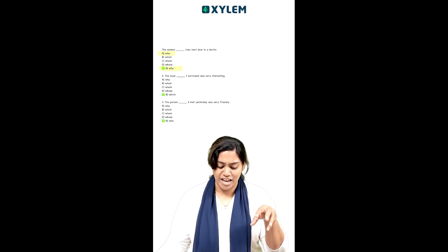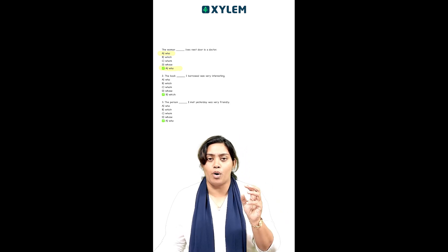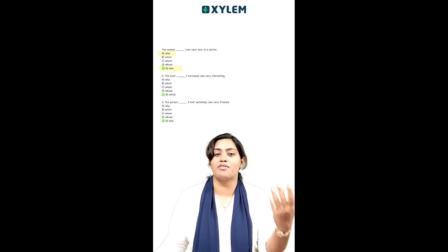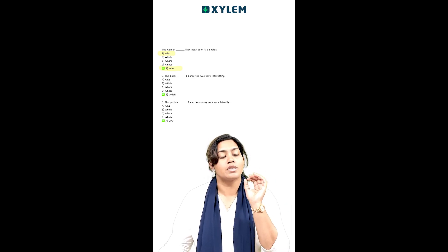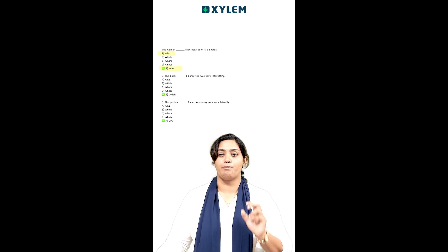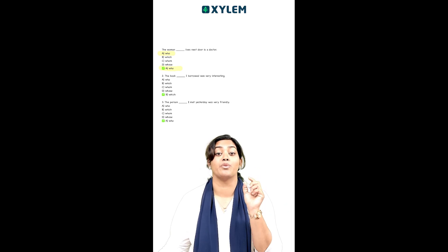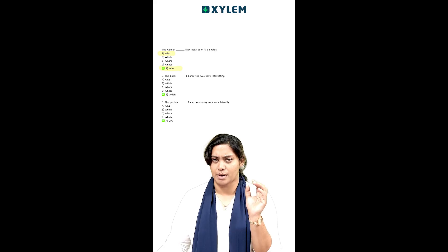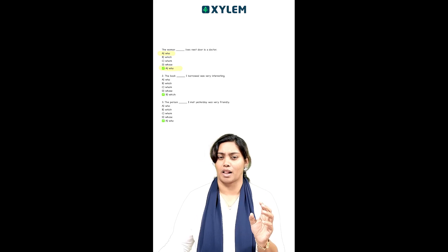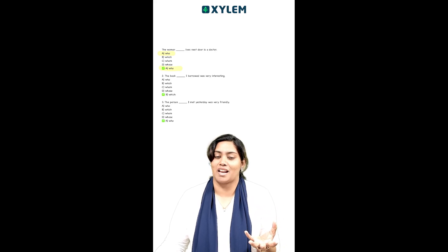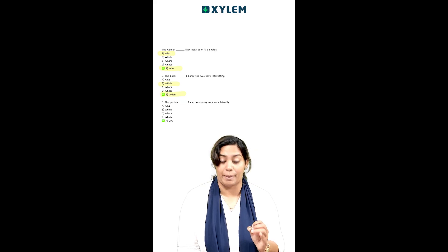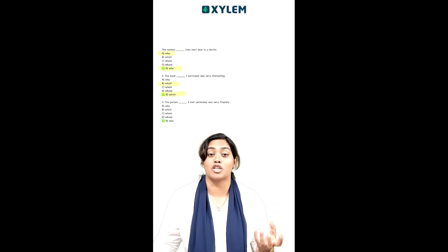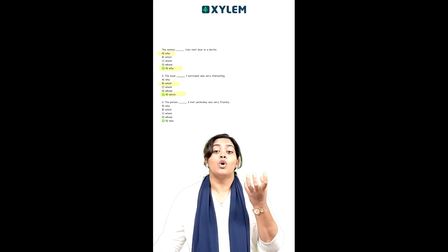Second question: 'The book ___ I borrowed was very interesting.' It is about a book — a thing, a material. So if we fill in the blank, we can't use who. Which one? We use 'which' for a material thing.